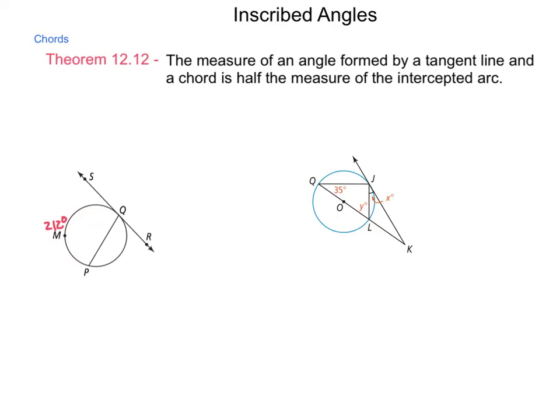which means that the angle formed at PQS will be half of that, or 106 degrees.